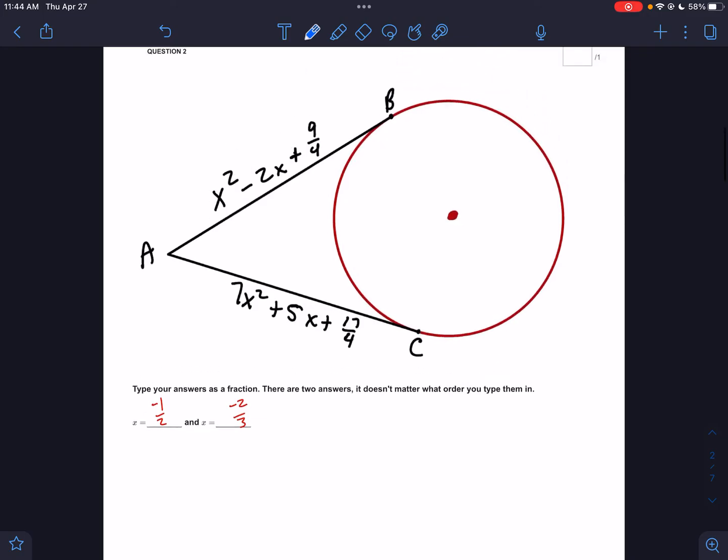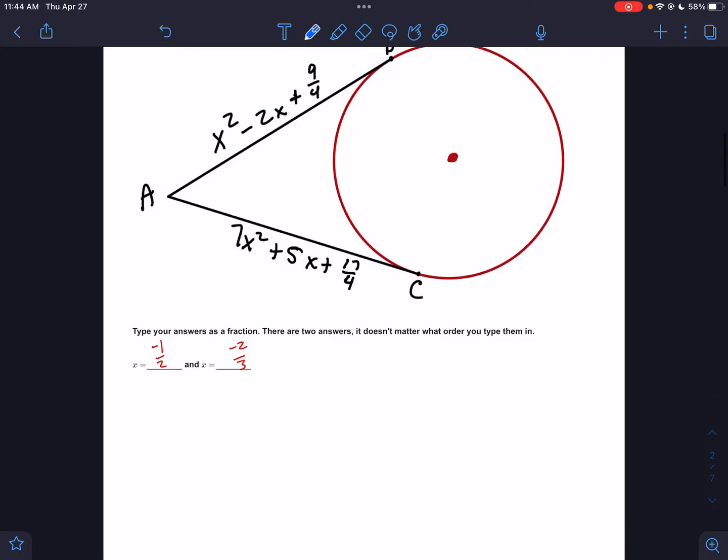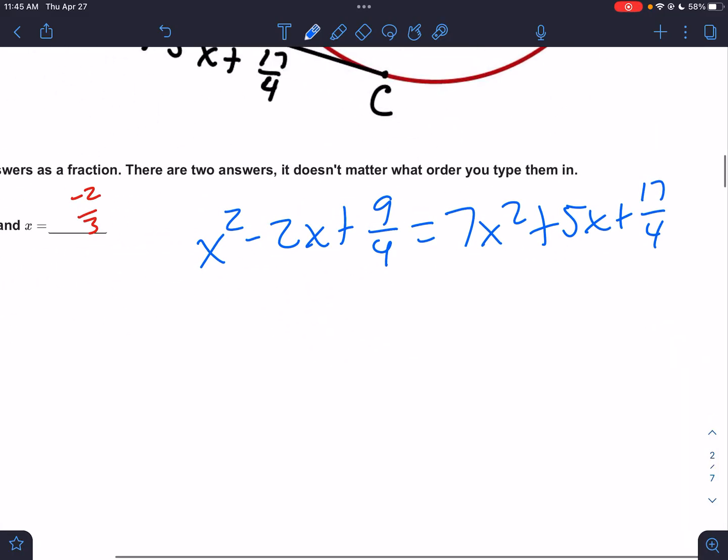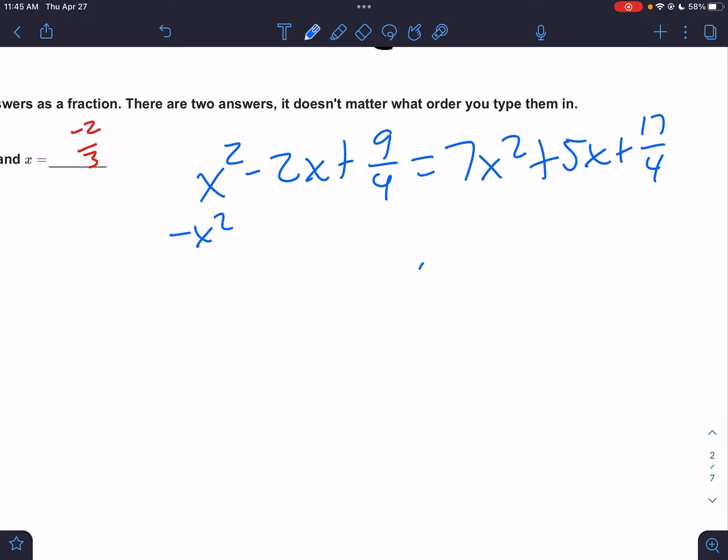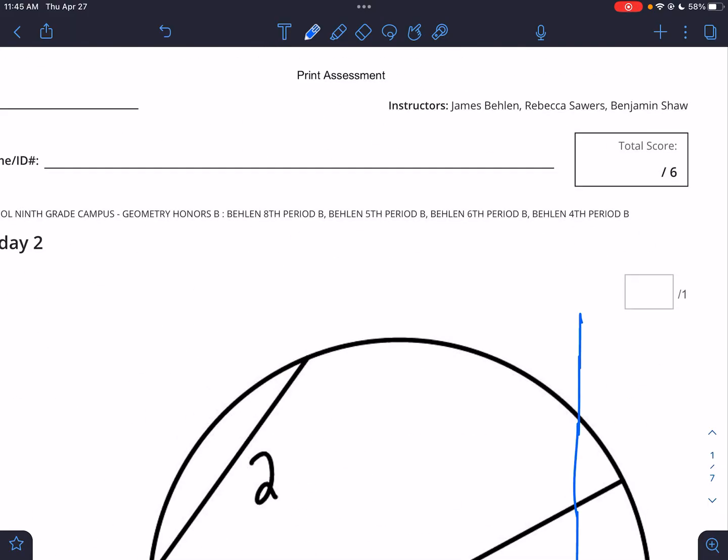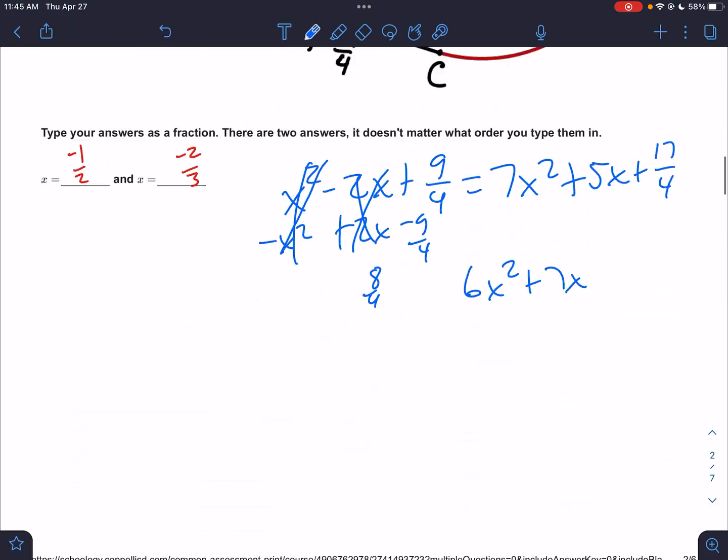Second situation: if two tangents start at the same place and hit the same circle, they have to be the same size. So we know that x² - 2x + 9/4 = 7x² + 5x + 17/4. We need to make one side zero. I'm going to subtract x² giving me 6x², add 2x giving me 7x, and subtract 9/4. Well, 17 minus 9 is 8, so really that's 8/4, which is just 2.